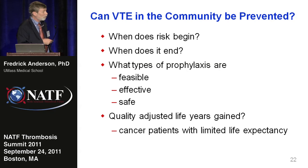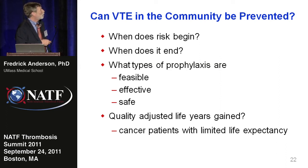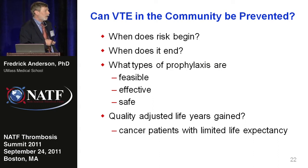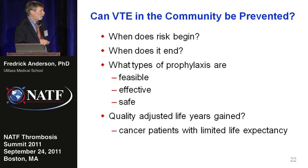A question that this meeting may help address is: can we really prevent VTE in the community? Do we know how to do it? When does the risk begin? When does it end? And what types of prophylaxis are feasible, economically and practically effective, and safe? The idea of a 10-year risk of VTE — as we think about heart disease or arterial disease — is a new mindset for venous thrombosis. We're challenged to shift from the acute hospital period to a community-based 10-year risk of VTE, and we don't yet know if we have the tools to do something about it.